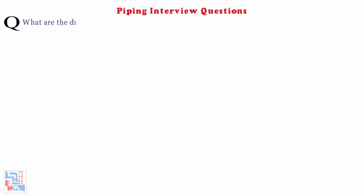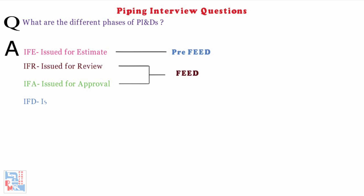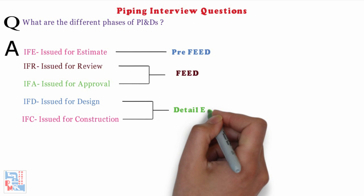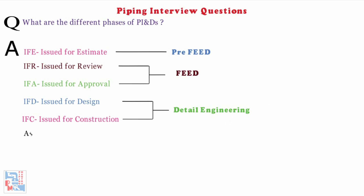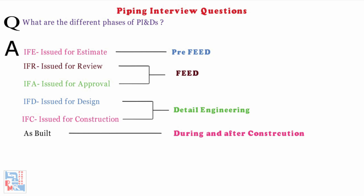What are the different phases of P&IDs? There are around 6 phases of P&IDs. First, IFE (Issued for Estimate), developed during the pre-feed phase. Then IFR (Issued for Review), then IFA (Issued for Approval), developed during the feed phase. Then IFT (Issued for Design), then IFC (Issued for Construction), developed during the detailed engineering phase, and then as-built, developed during and after construction.